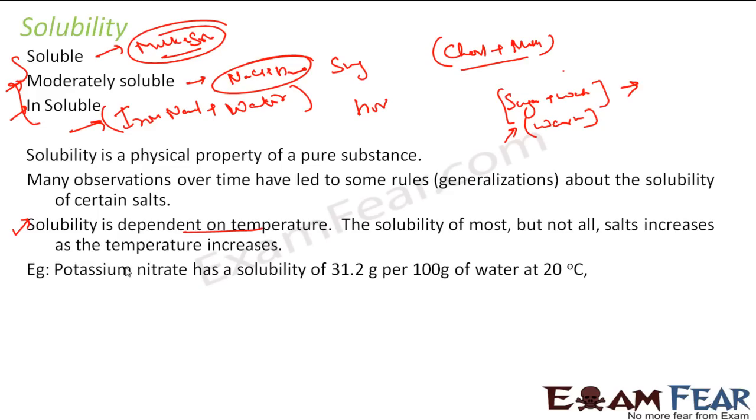For example, when you talk about solubility, you don't only talk about the substance but also about temperature. You say potassium nitrate has a solubility of 31.2 grams per 100 grams of water at 20 degrees Celsius. That means when water is 20 degrees Celsius, you can completely mix 31.2 grams of potassium nitrate in 100 grams of water. Solubility depends on two factors: the property of the substance and the temperature.